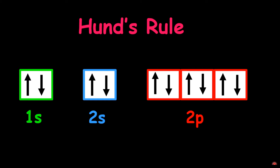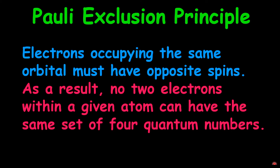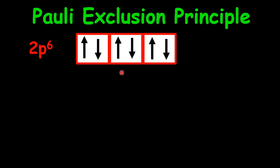Our final concept is the Pauli Exclusion Principle. It states that electrons occupying the same orbital must have opposite spins. As a result, no two electrons within a given atom can have the same set of four quantum numbers — each electron in a given atom is exclusive. To demonstrate this, let us look at the 2P6 as our example. Since it is a P orbital, there are three possible orbitals: X, Y, and Z.